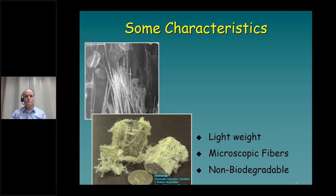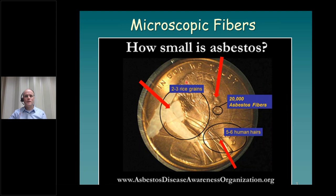How small is asbestos? In this image, you can see a Lincoln penny with two to three grains of rice, five to six human hairs, and right in front of President Lincoln's mouth, there's an area that could have 20,000 asbestos fibers. And President Lincoln looks like he's about to inhale those.